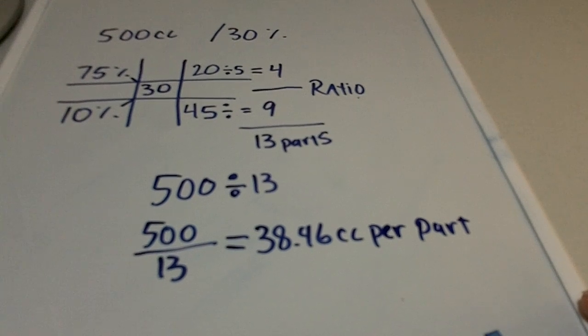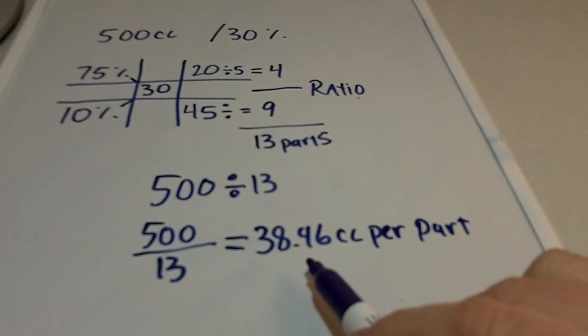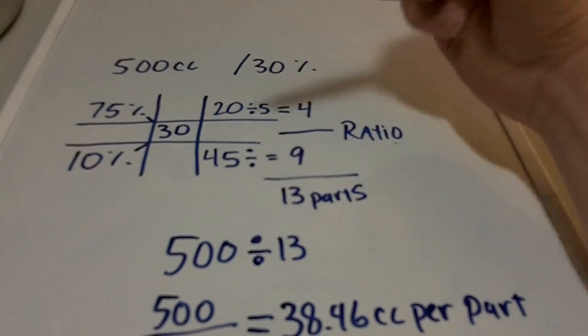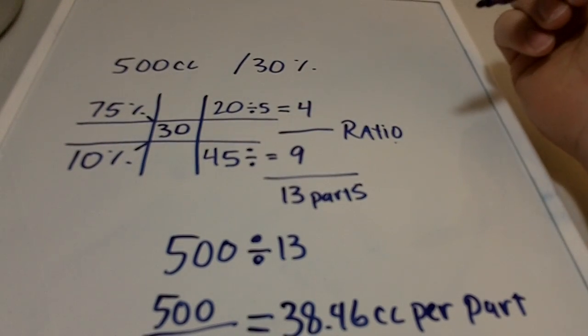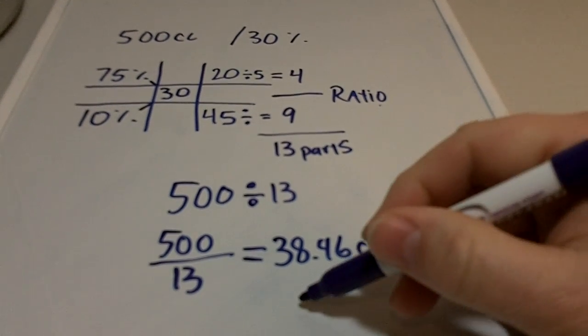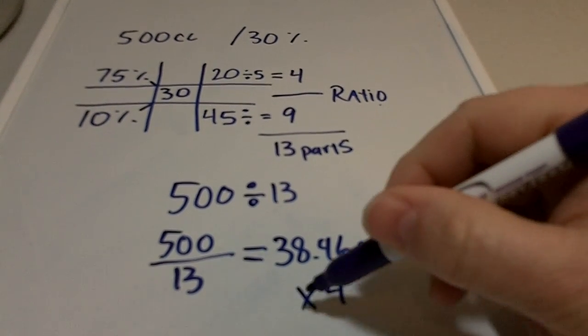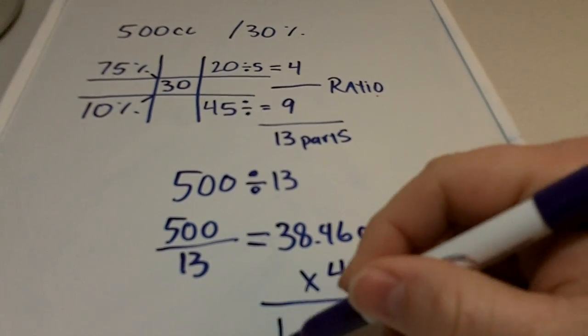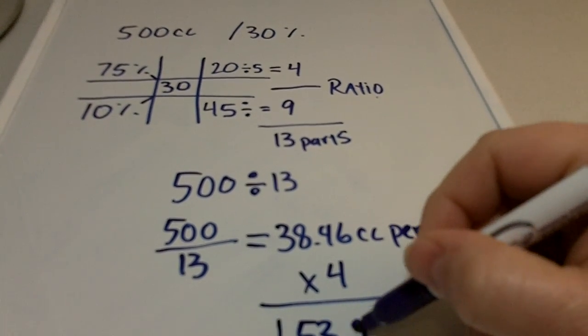Now I know that's how much it's going to be in each part. I go back up here and I see that I need 4 parts of the 75%, because in the question it only asks how many cc's of the 75% will you need. So I just take the 38.46, I multiply it by 4. What that gives me is 153.84.